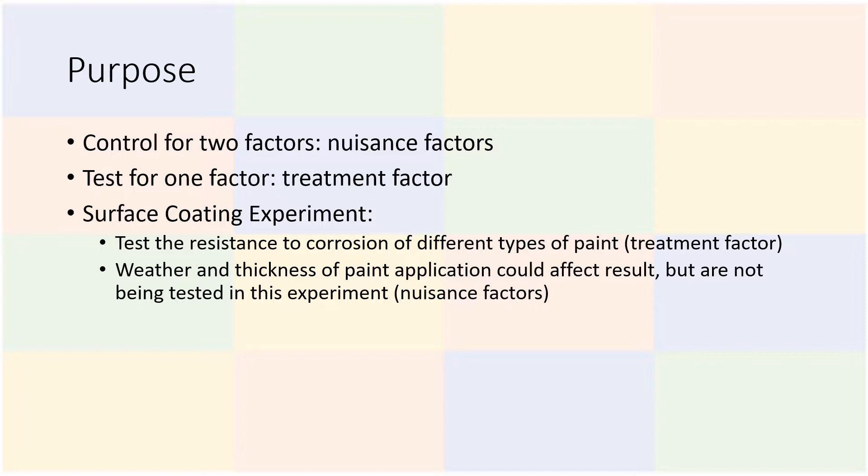Latin square designs can be used to control for two factors that may cause variability, called nuisance factors, so that another variable of interest can be tested, the treatment factor.